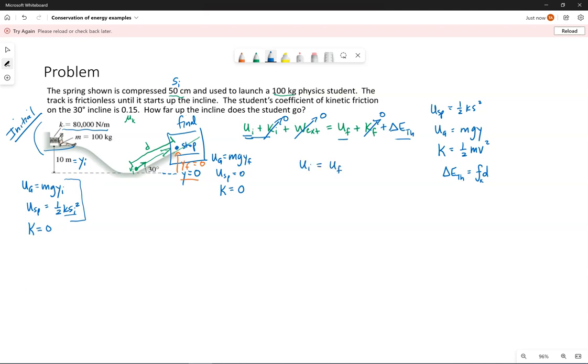All of the potential energy that exists in the system initially will end up again partially as potential energy, but partially as thermal energy. So from here we want to plug in initially we're saying mgy initial plus one half ks initial squared. So we're plugging in these individual equations that describe potential energy due to gravity, due to the spring, to write out specifically what we mean in this conservation of energy equation.